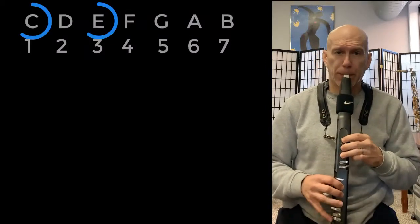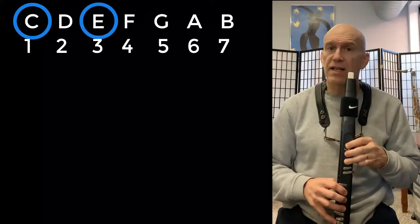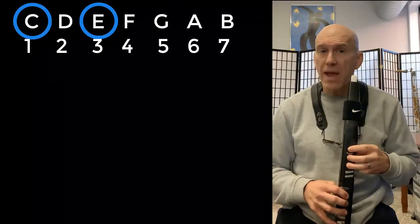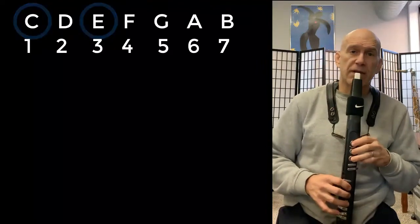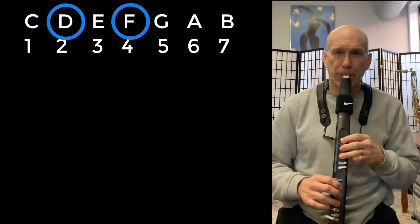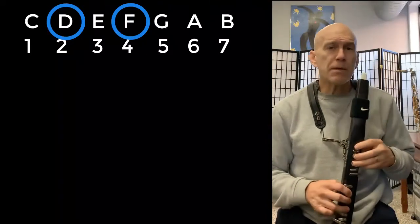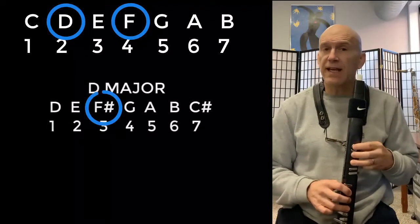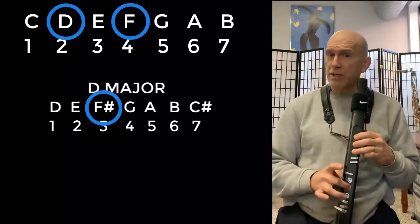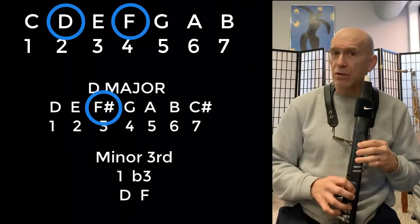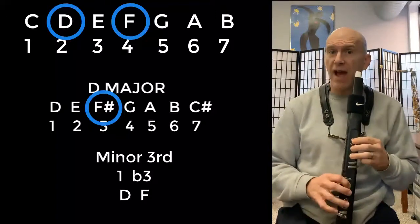If we go up a C scale and find all the thirds, let's do C. C to E. That's a major third. Let's do D. Well that's a minor third because D in the key of D, F would be sharp but since we're playing the C scale it's an F natural which is a flat third so D to F natural.